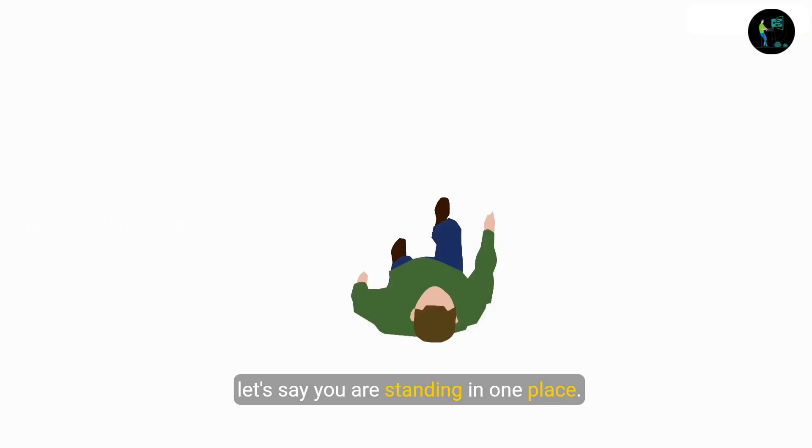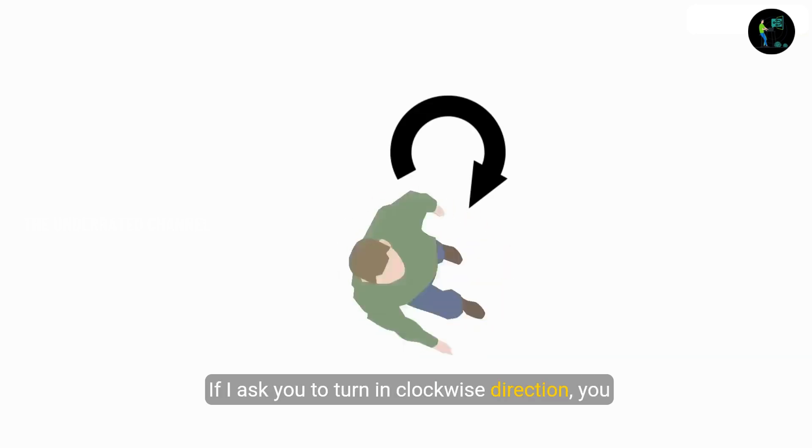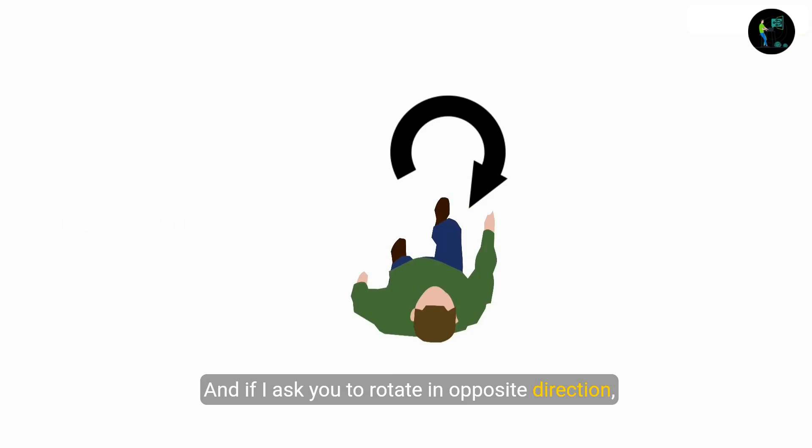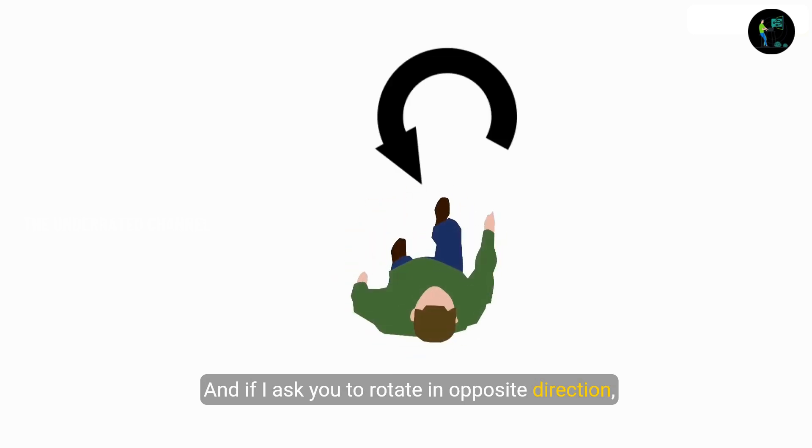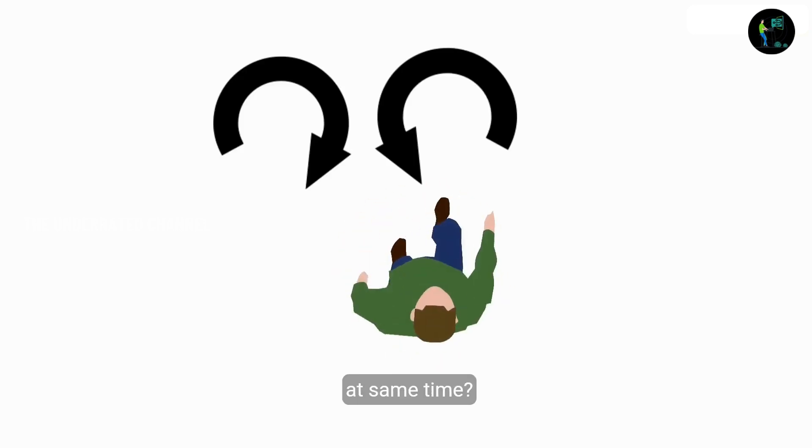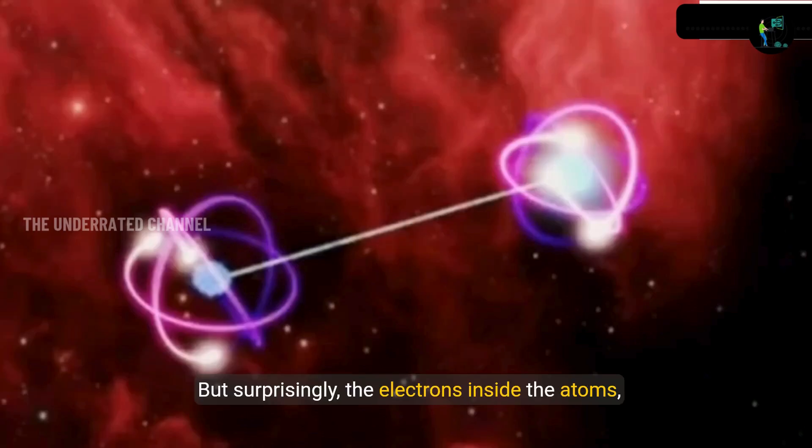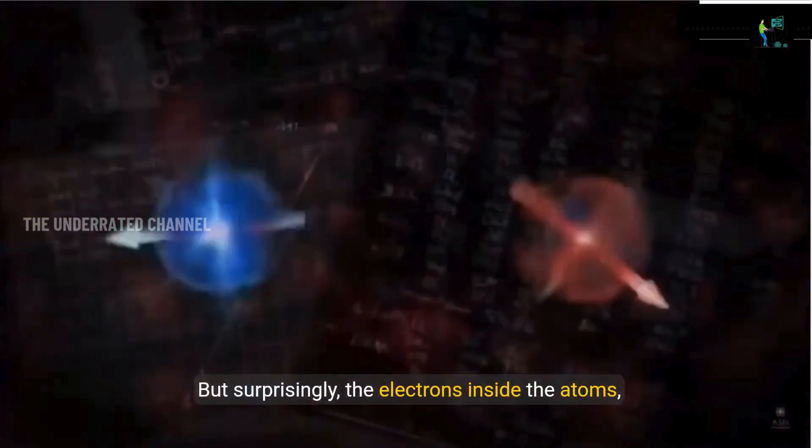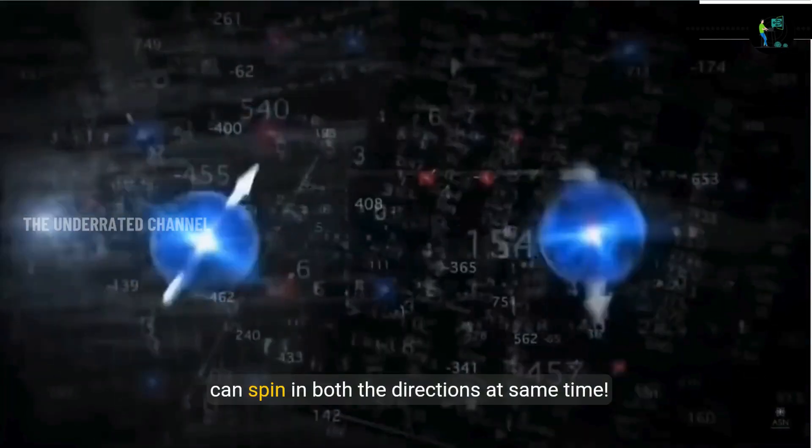For example, let's say you're standing in one place. If I asked you to turn in clockwise direction, you can. And if I asked you to rotate in opposite direction, you can turn. But what if I ask you to rotate in both directions at the same time? You can't rotate, right? But surprisingly, the electrons inside the atoms can spin in both directions at the same time.